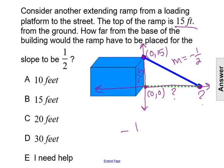We want to say negative one over two is equal to what over what? Well, we know that the rise should be negative 15. It would be negative 15 over something.